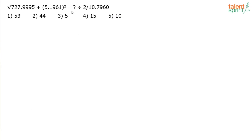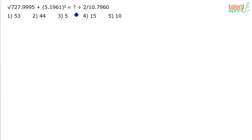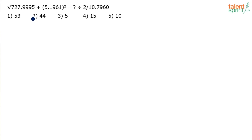Our job is to find the approximate value that comes in place of the question mark. As you can observe from the options, they are not very close to each other — 53, 44, 5, 15, and 10 are spaced out properly — which means we can do approximation to a good extent here.